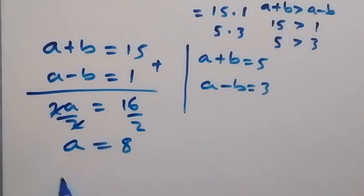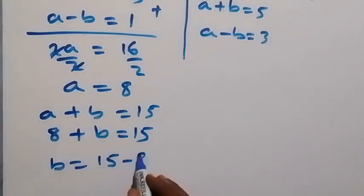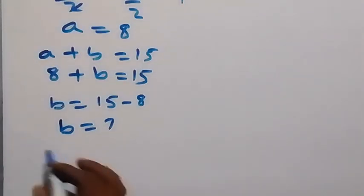Using one of the equations, a+b = 15. Since a = 8, we have 8+b = 15. Solving, b = 15-8 = 7. So we can write (a,b) = (8,7).